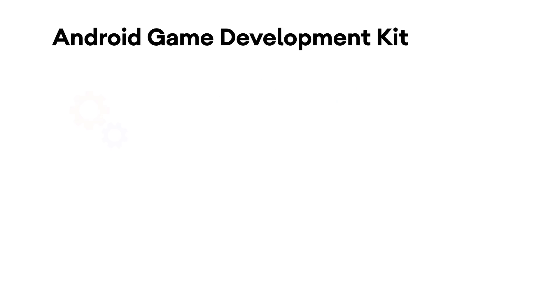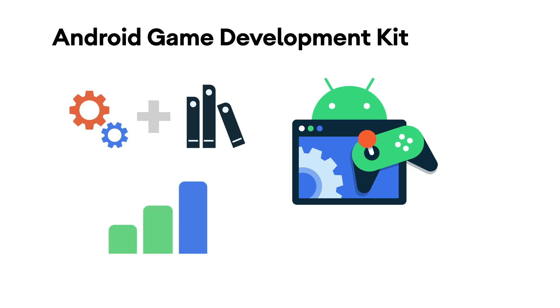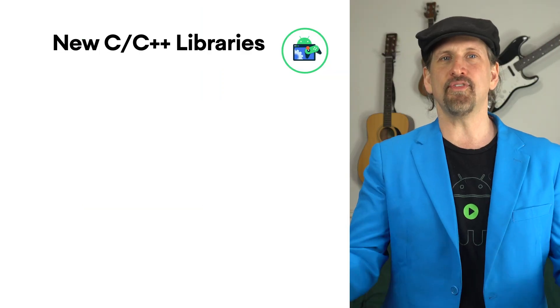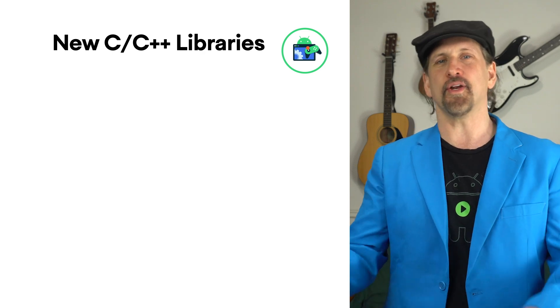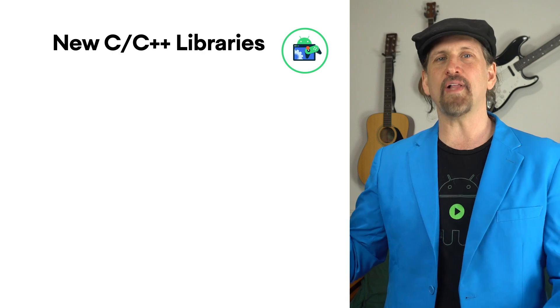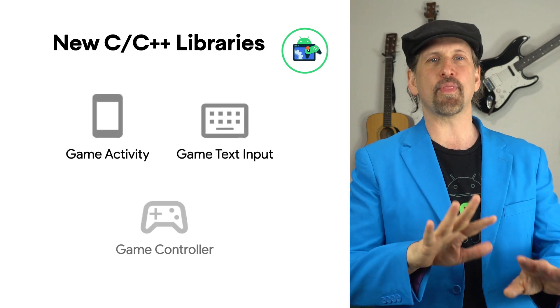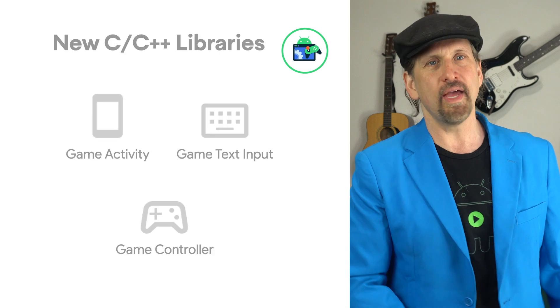Number one: Android Game Development Kit. The Android Game Development Kit, or AGDK, is a full range of tools and libraries to help you develop, optimize, and deliver high-quality Android games. It includes an array of C and C++ libraries to make it easier than ever to integrate your game with the best of Android, including foundational classes for activity and input combined with our existing frame pacing and high-performance audio libraries.